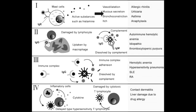Name some diseases that can occur due to type 3 hypersensitivity reaction. Type 3 hypersensitivity reaction can lead to lupus, polyarteritis nodosa, post-streptococcal glomerulonephritis, serum sickness, and Arthus reaction. A classic example of Arthus reaction is swelling and inflammation seen following a tetanus vaccine.